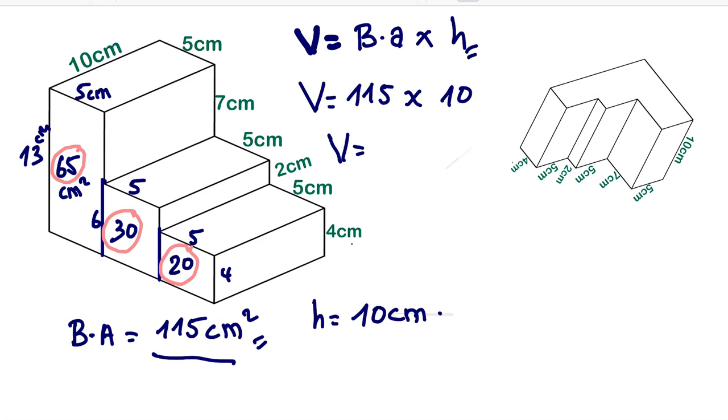the base area 115 centimeters squared times 10 centimeters. So the volume will be, if we multiply 115 times 10, we are going to have 1150 centimeters cubed.